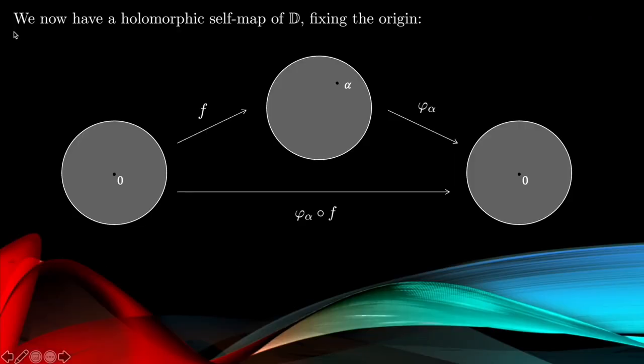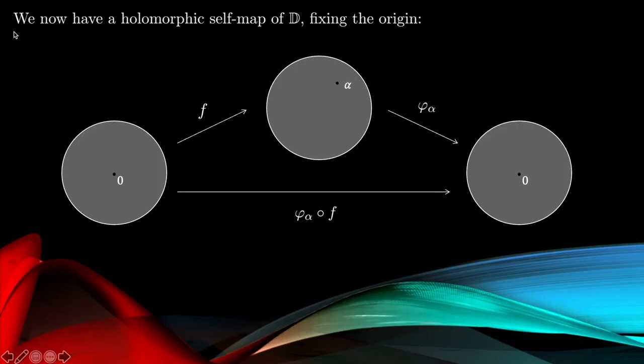Now I can use the homogeneous structure of the disc to construct a holomorphic self-map of the unit disc which fixes the origin. Namely, I send f to the disc which sends the point zero to the point α, and then I use the fractional linear transformation or the Möbius transformation to send α back to the origin and then consider the composition.